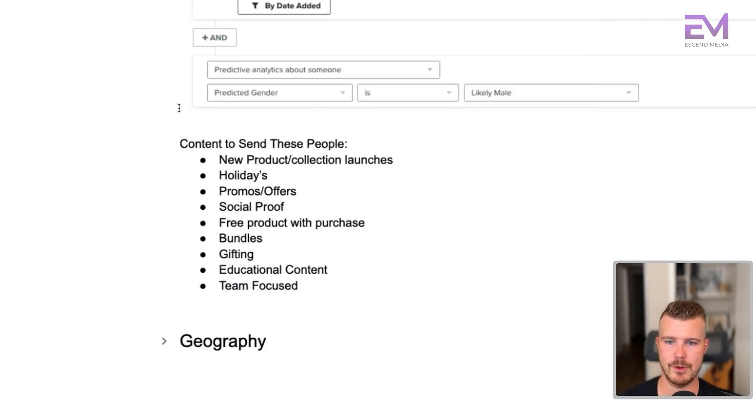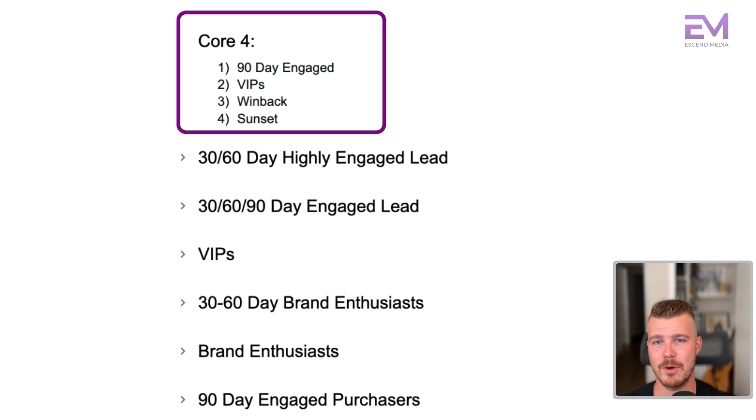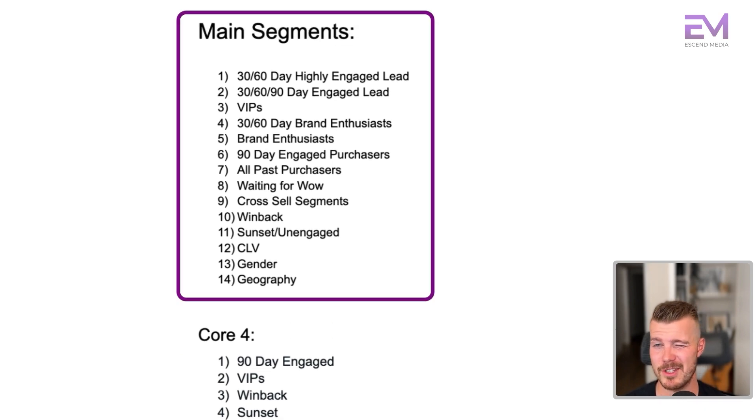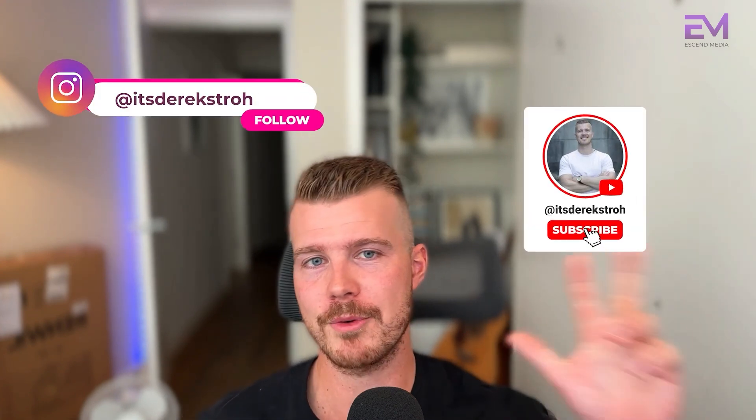Let me scroll up to review those key segments again. The core four segments are the 90 day engaged, VIPs, win back, and sunset segment. Don't get overwhelmed — start with those four and then build out the others based on what's required for you. This is the last video of the segmentation series. Watch all three videos if you haven't already, because it's very important to maintain good email health and make sure the right people are getting the right message at the right time to crush your email marketing.